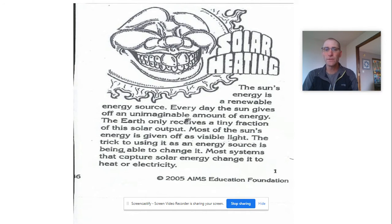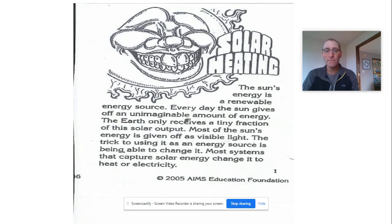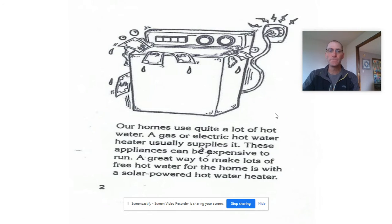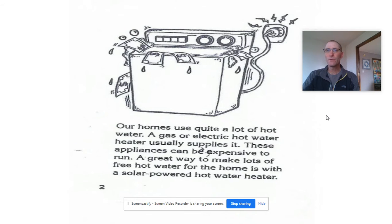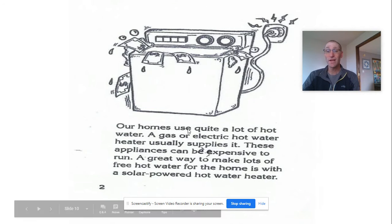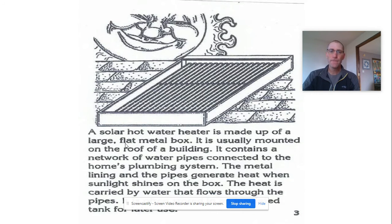Solar is more than just solar cells — it's also solar heating. Each day the sun gives off an unimaginable amount of energy and we receive just a tiny fraction of it. The trick is gathering as much as we can and turning it into electricity or heat. Our homes use quite a bit of hot water, usually heated by natural gas or electricity, but many people have turned to solar. Solar water heaters use black pipes that run water through them to heat it up before bringing it inside.